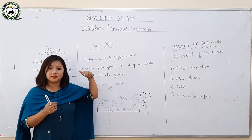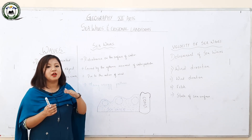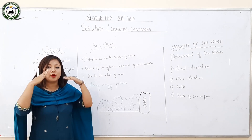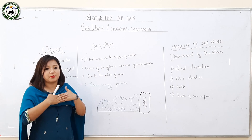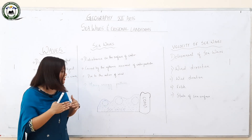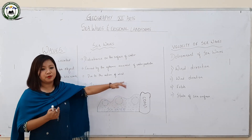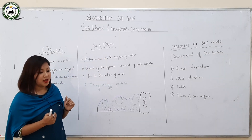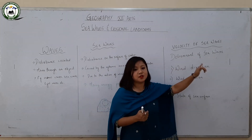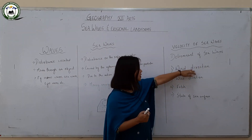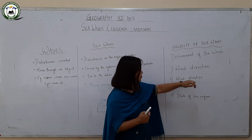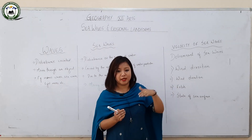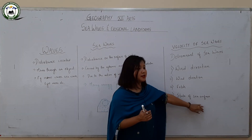The sea water is always moving in constant motion, and wind is also always blowing. When the two come in contact, energy is created and produced as a circular pattern, regarded as sea waves. There are several determinants of sea wave velocity: wind direction, wind duration, fetch (the area covered by the wind), and the state of the sea surface.